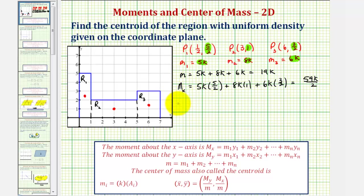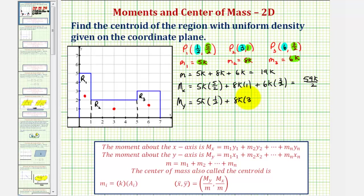Now we'll find the moment about the y-axis. To find the moment about the y-axis, we use the x-coordinates, because they tell us how far the points are from the y-axis. So we have 5k times one-half, plus 8k times three, plus 6k times six. This sum comes out to 125k/2.